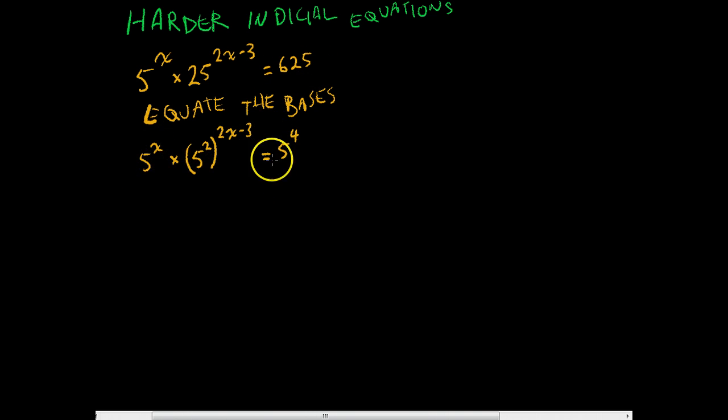Okay, so we've equated all of our bases here. I'm just going to ignore this 5 to the x at the front for now. You should recall from your index laws that a to the power of b to the power of c equals a to the power of bc, b times c. So we can apply the same rule here. This is going to be 5 to the 2 times 2x minus 3.